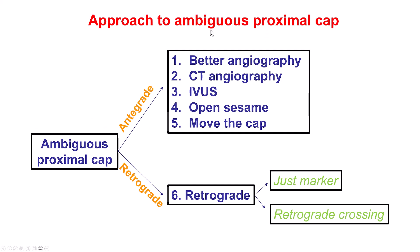To summarize, in a patient that has an ambiguous proximal cap: the first step is to do a better angiogram in different projections to see if we can clarify the ambiguity. The second step, which has to happen before the case, is to do a coronary CT angiogram. The third is using IVUS, which requires a side branch close to the proximal cap. The fourth is to use the open sesame technique with balloon inflation into a side branch. The fifth is to go extra-plaque — the so-called move-the-cap techniques. And the sixth is to use the retrograde approach.